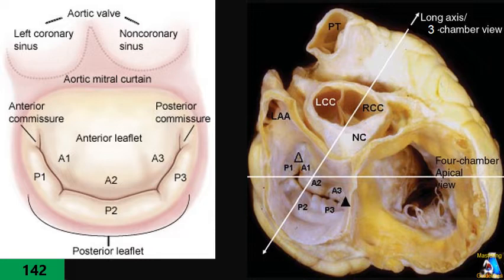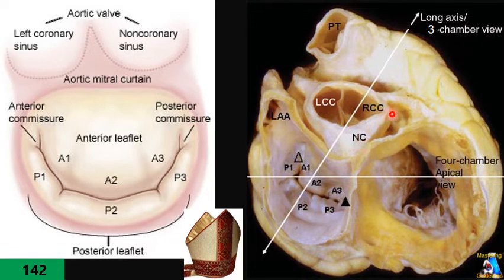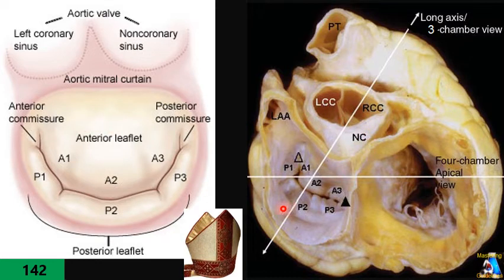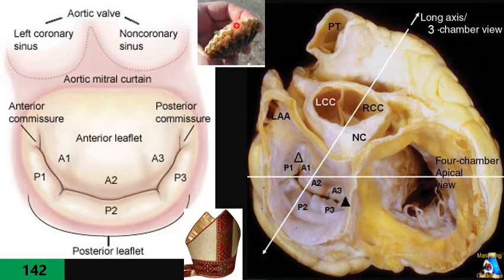The mitral valve is called a bicuspid atrioventricular valve, or because of its shape resembling a bishop's hat or mitre, they call it the mitral valve. It has two leaflets — anterior and posterior. This is a cephalic or surgical view, meaning the heart is cut at the base and viewed from the head of the patient. On the surface, it looks like it has three tuberosities or indentations, and because they look like scallop shells, they are called scallops.